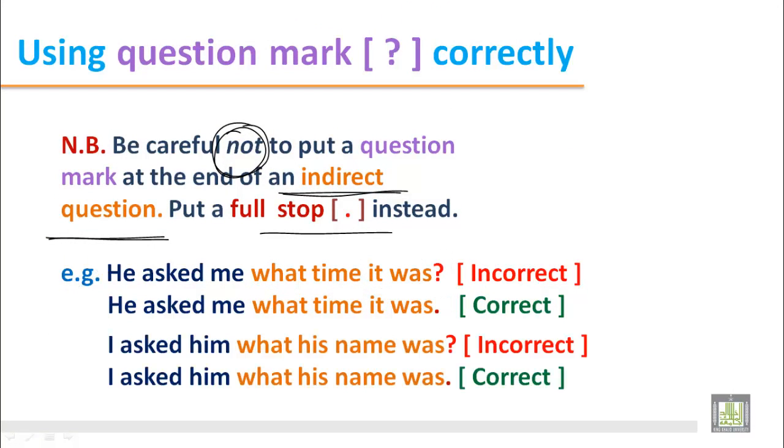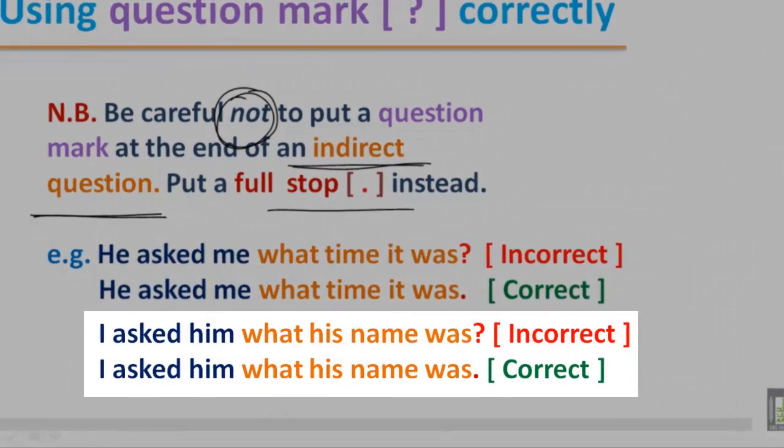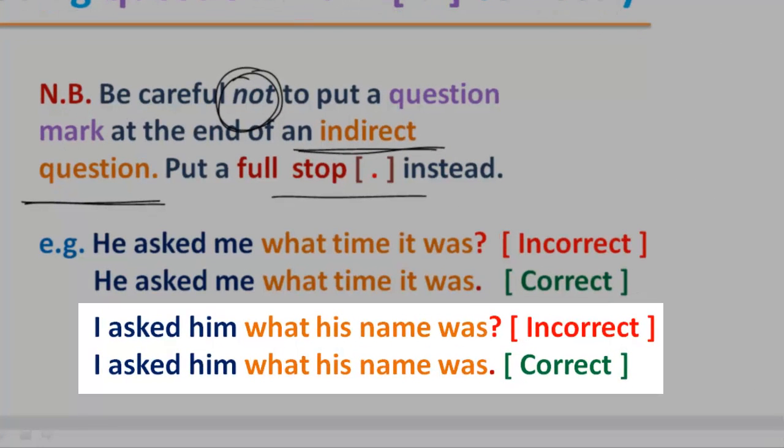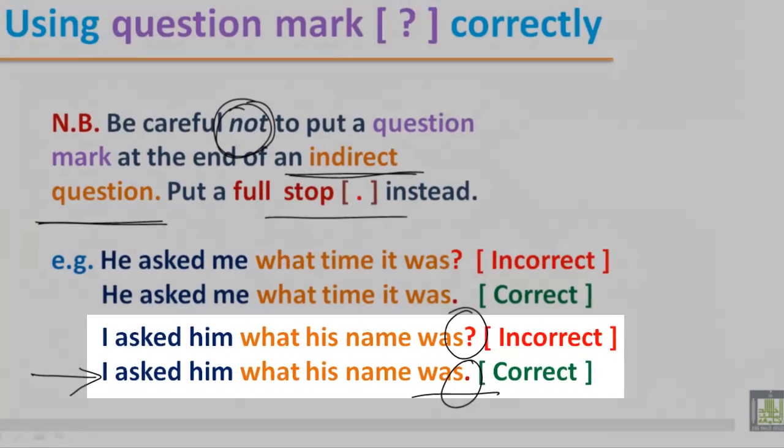There is another pair. I asked him what his name was. The same mistake we usually make putting a question mark though it is not a direct question. The correct answer should be: I asked him what his name was. And we cannot put a question mark. Rather, we have to use a full stop instead.